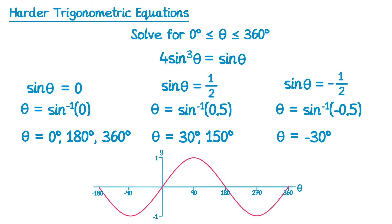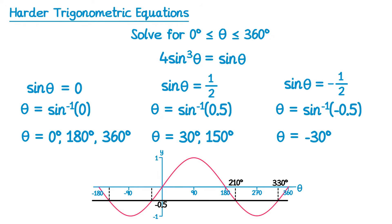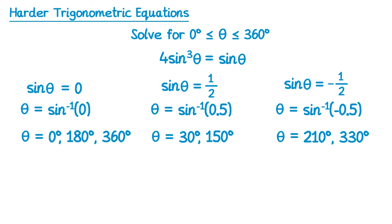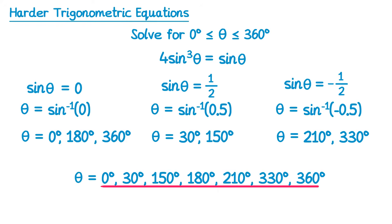For sin theta equals negative one half, drawing a line at negative one half shows two solutions in the range. We have negative 30, and by symmetry the other is negative 150. Adding 360 to both gives 210 degrees and 330 degrees. So we replace negative 30 with 210 and 330 since they're outside the required range. Altogether for this equation there are seven solutions: 0, 30, 150, 180, 210, 330, and 360 degrees.